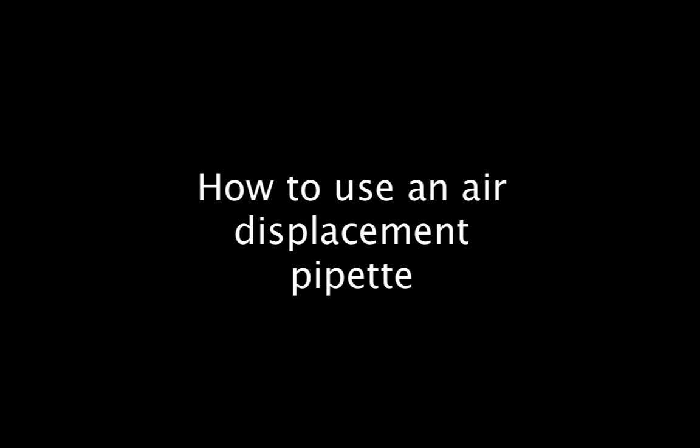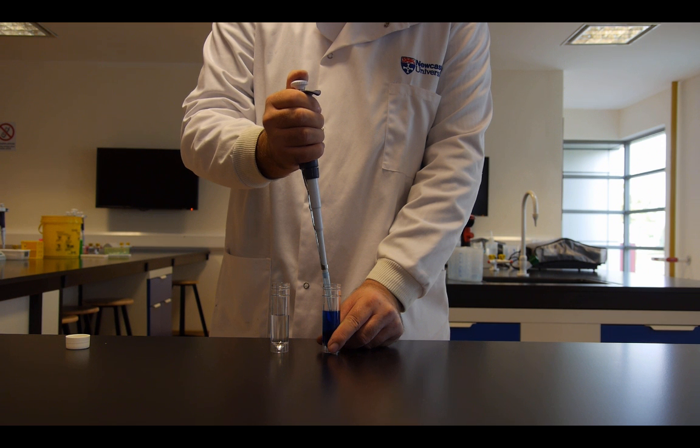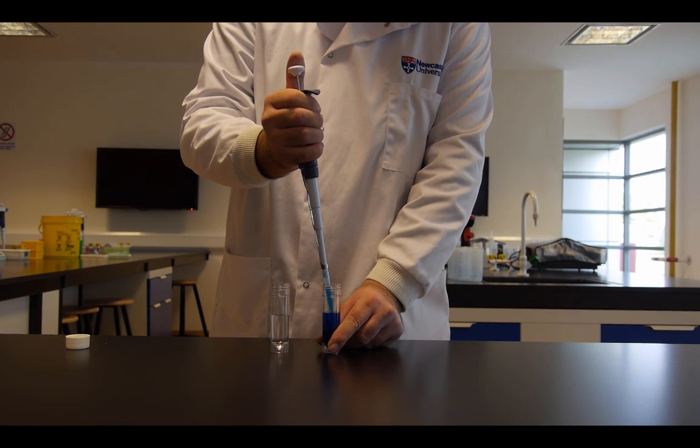In this short video we're going to look at how to use an air displacement pipette. With a pipette tip fitted, push down to the first stop, place the tip in the liquid and slowly bring up your thumb.